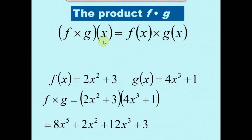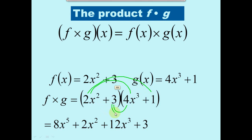The product of f and g: when we write f times g in parentheses of x, that should equal f of x times g of x. We're just talking about the convention of how we write operations of functions. So instead of writing f of x times g of x, we may just write f times g — both functions are with respect to x, and the resulting function should also be with respect to x. When you do f times g, you take the f function times the g function and then multiply it out using FOIL.